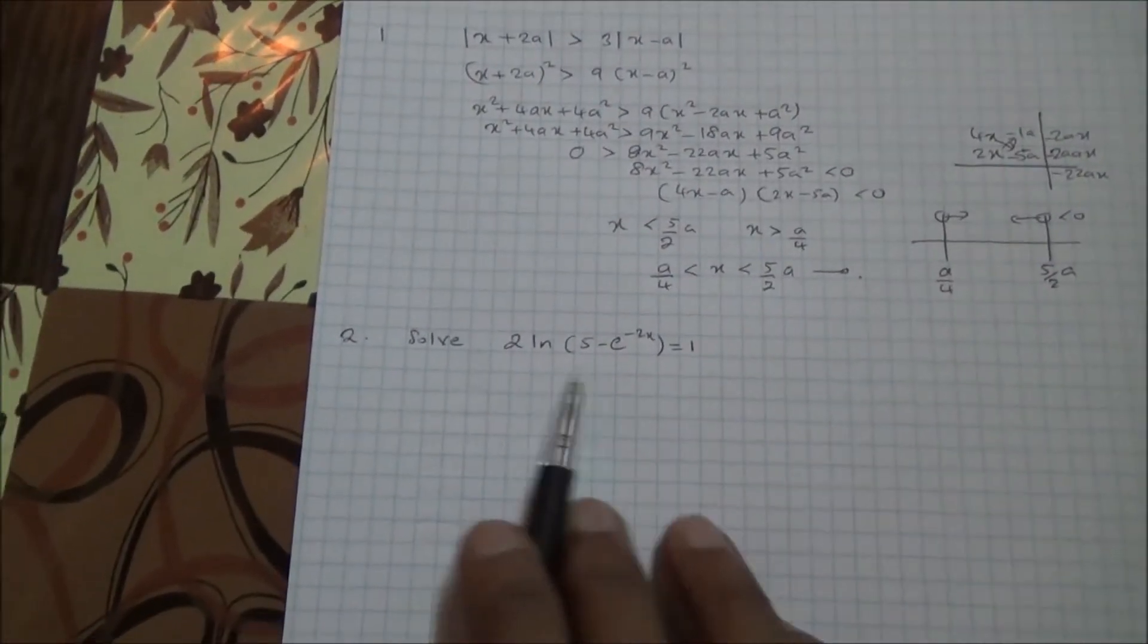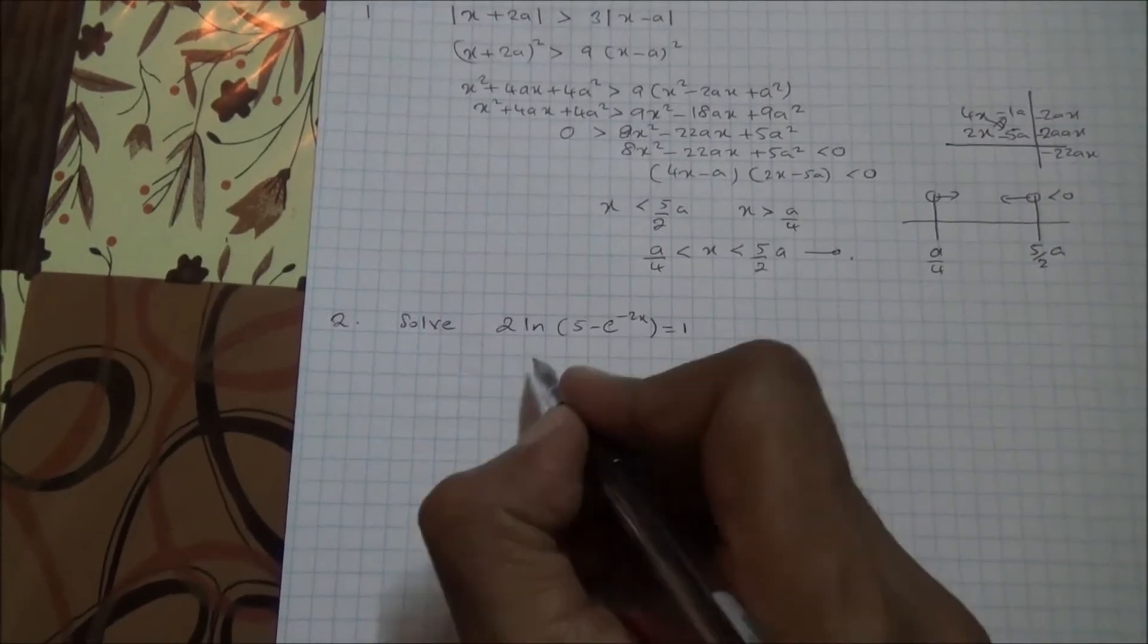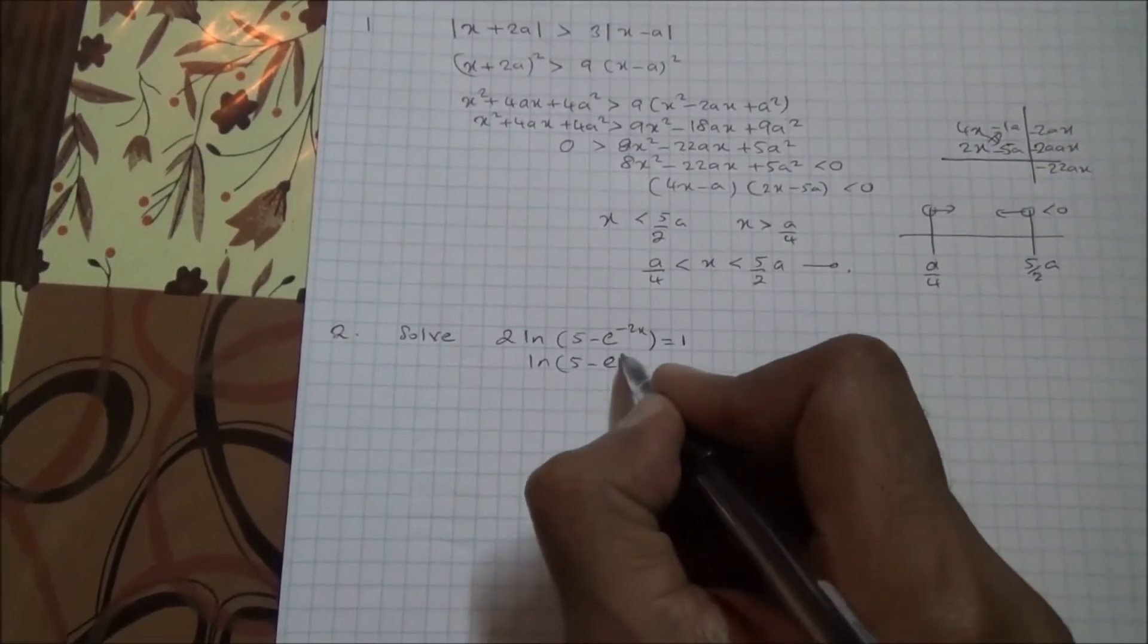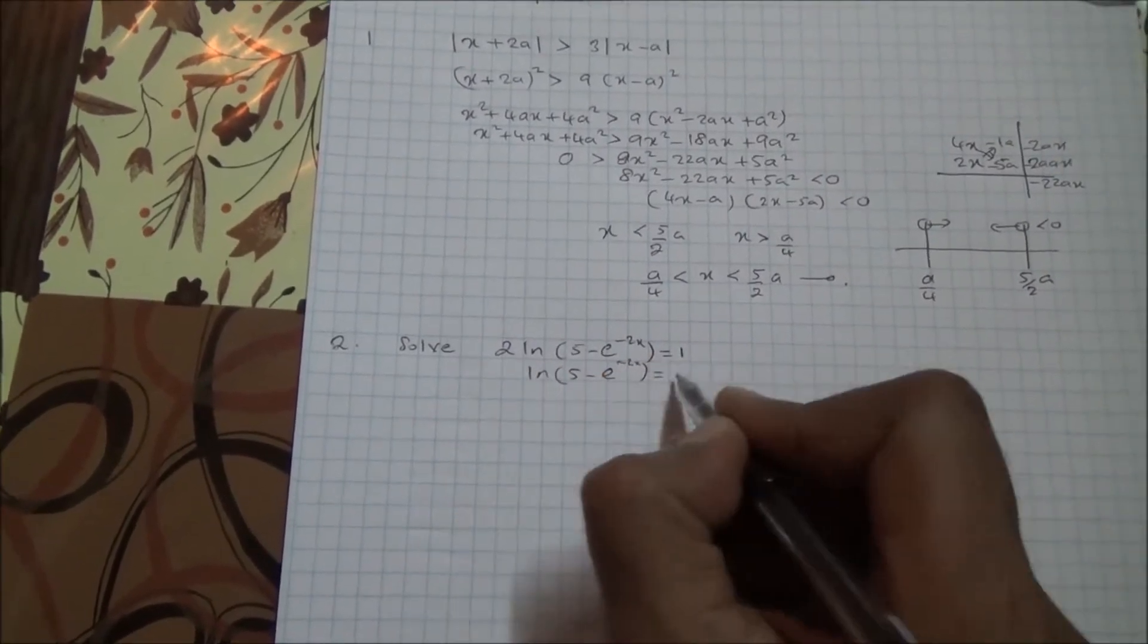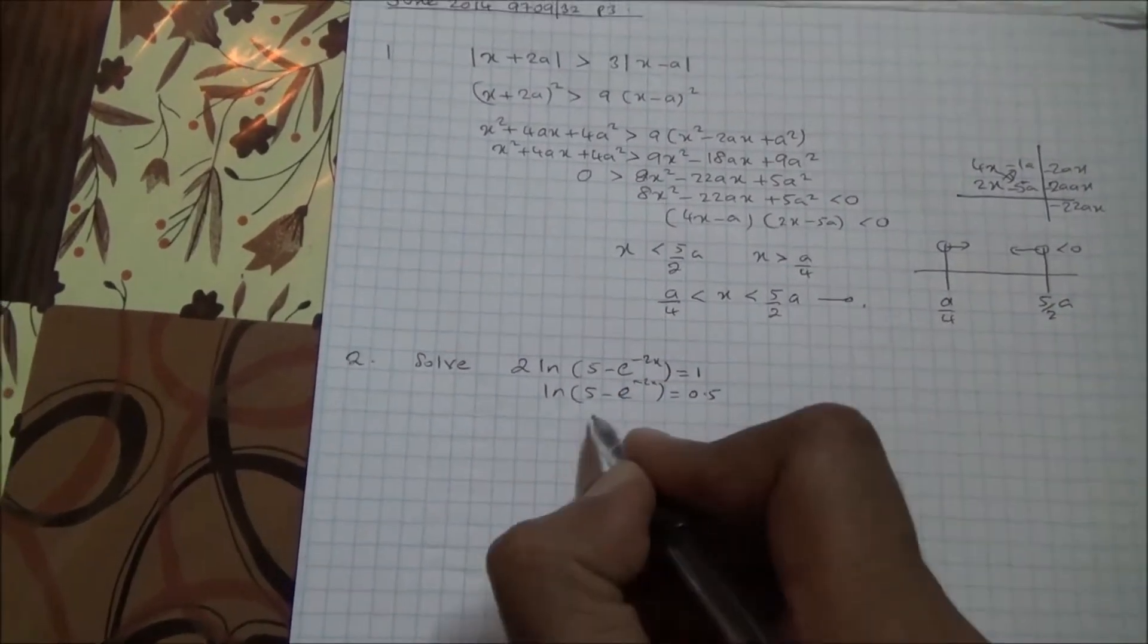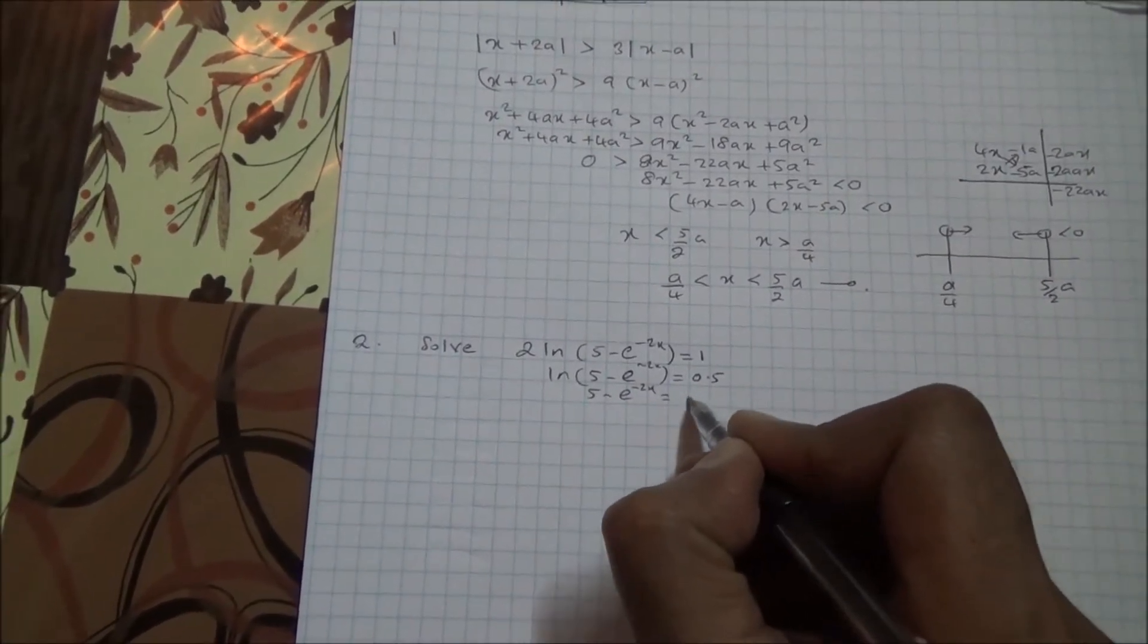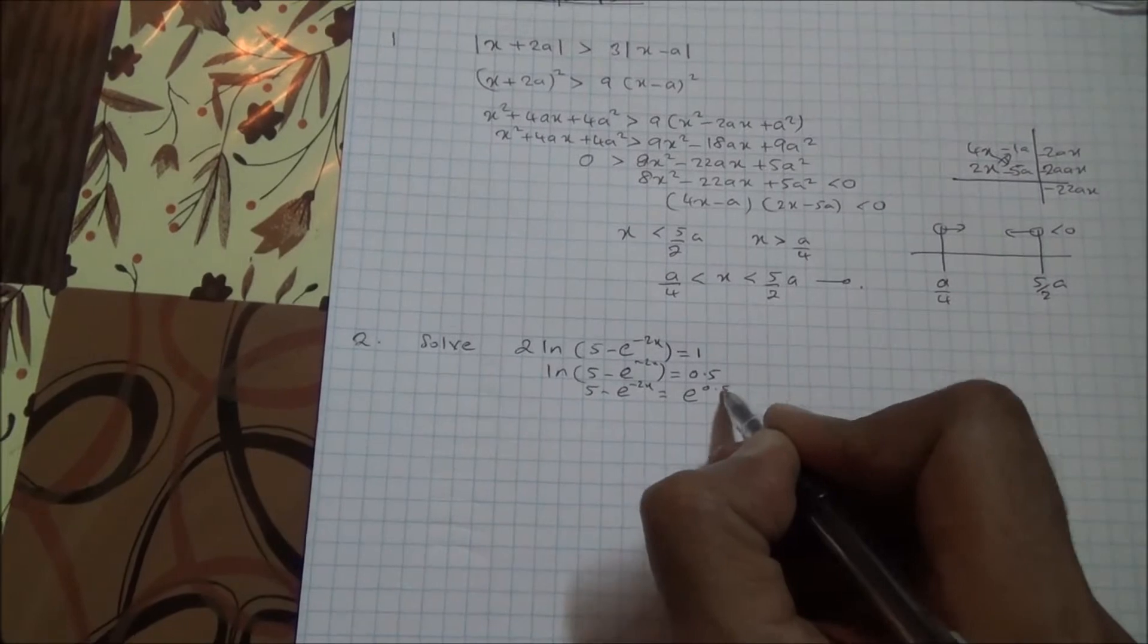So here's the equation, we need to solve this, so the 2 can go there. I've got ln 5 into 5 minus e to the power of minus 2x is equal to 1 divided by 2, which is 0.5. So 5 minus e to the power of minus 2x is equal to e to the power of 0.5.